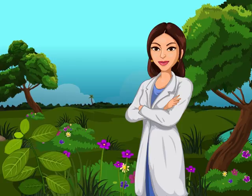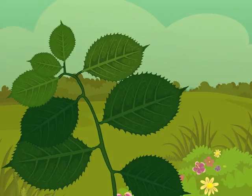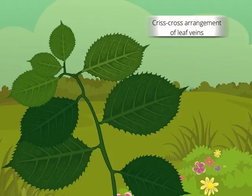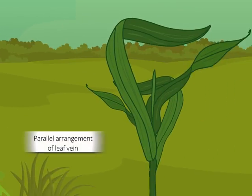Based on the arrangement of leaf veins, there can be two types of leaves. In some leaves, leaf veins are arranged in a criss-cross manner and form a network. In some other leaves, leaf veins are arranged parallel to each other as straight lines.